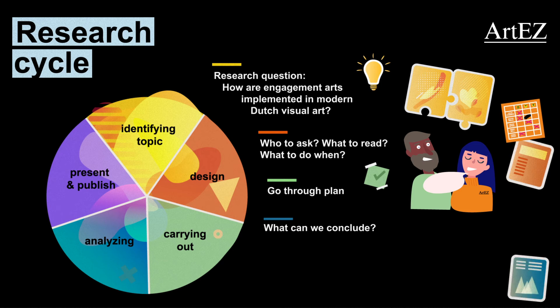The process and results are written down. This is normally done according to a framework of rules that researchers around the world have set as a standard, such as APA or Chicago. This makes sure that credit goes where credit is due, that facts are not easily misrepresented or misinterpreted, and that other researchers can quickly understand the value of your research.